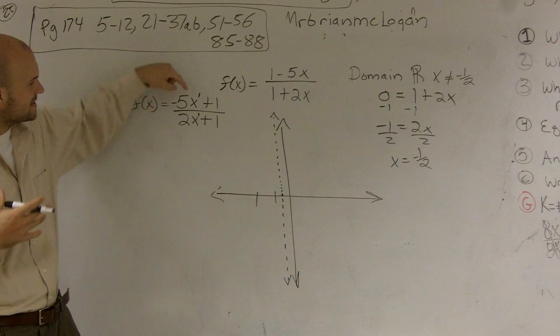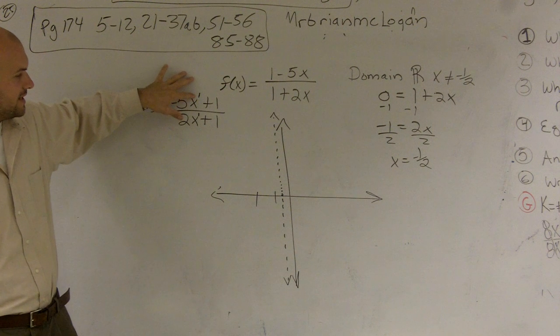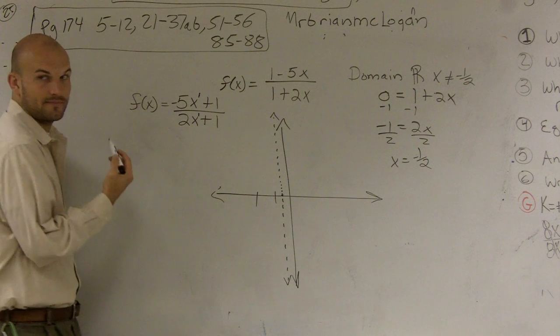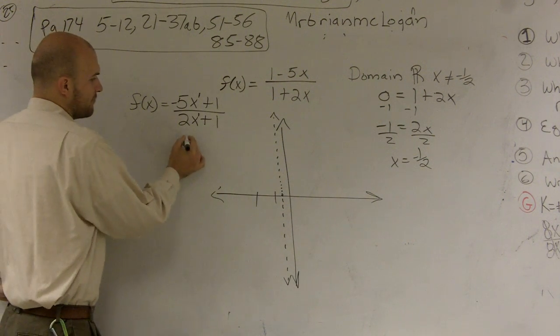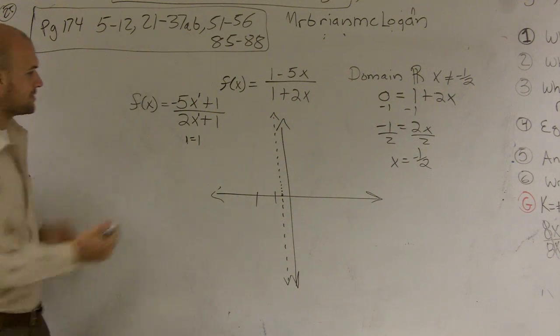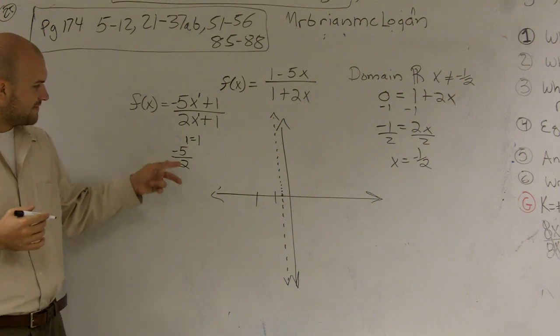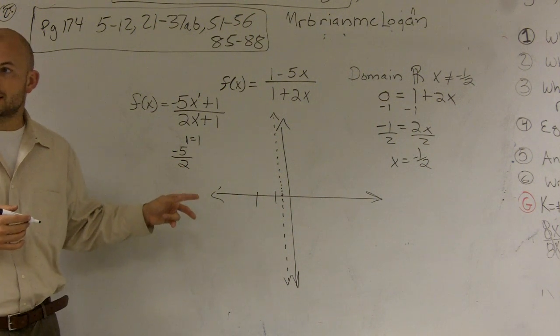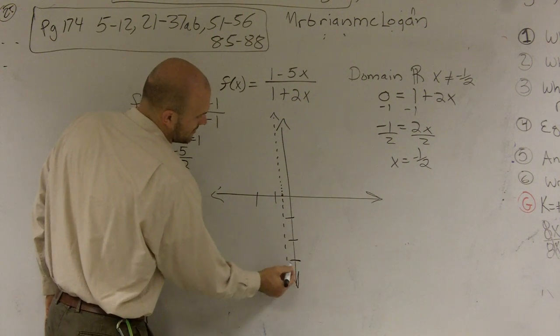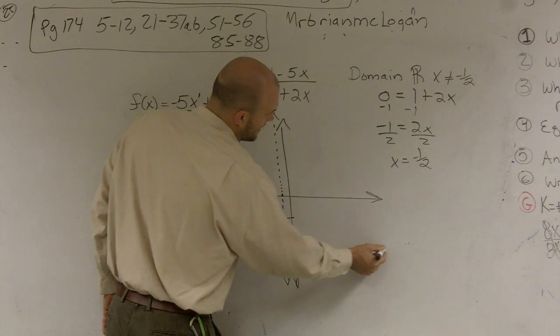And we call them a lot of times m and n. We just give them kind of our variable names. What they're saying is when your top degree is equal to your bottom degree, what you're going to do is you're going to take your coefficients and divide them. So since I have 1 is equal to 1, my degrees are exactly the same. All I'm going to do is I'm going to take my top degree, which is negative 5, and divide it by 2. So I'm going to take negative 5 and divide it by 2, and that's going to give me a negative 2.5. So therefore, my horizontal asymptote is going to be down at negative 2.5, and that's going to be a line right there.